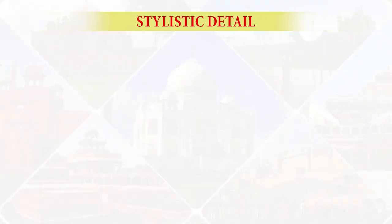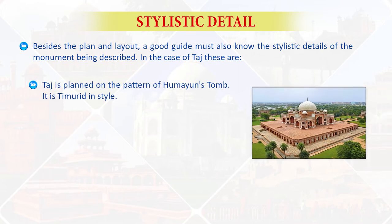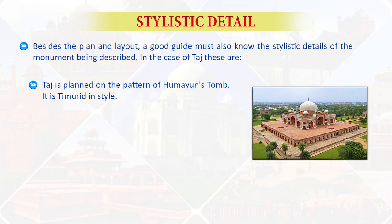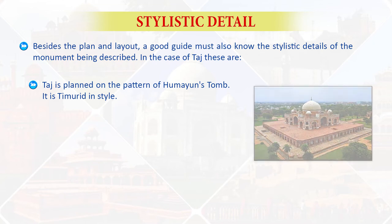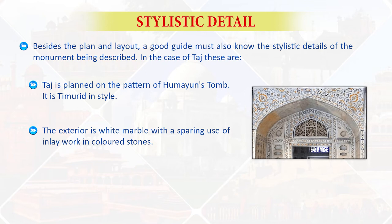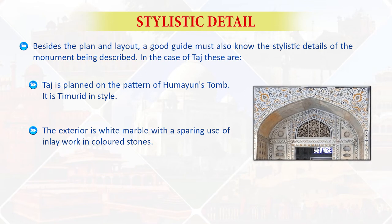If we talk about the stylistic details — besides the plan and the layout, a good guide must know the stylistic details of the monument being described. In the case of the Taj, these are: the Taj is planned on the pattern of Humayun's tomb; it is Timurid in style; and the exterior is white marble with a sparing use of inlay work in colored stones.